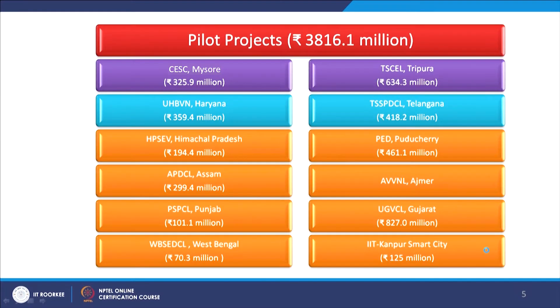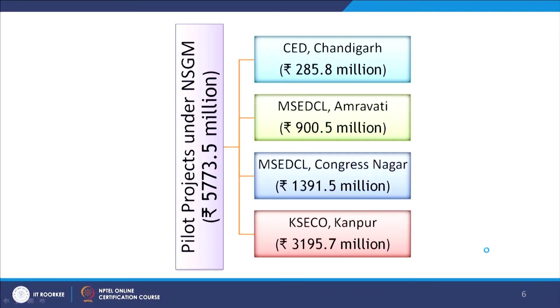The pilot projects cost a great deal — 3,816 million rupees have been spent to achieve smart grid outlook through these pilot projects. There are also pilot projects under NSGM, the National Smart Grid Mission, which has spent 5,773 million rupees at Chandigarh, Amravati, Congress Nagar, and Kanpur, where projects are in process.